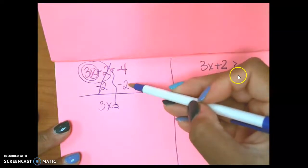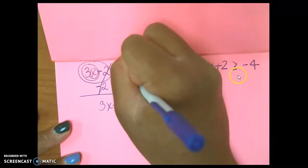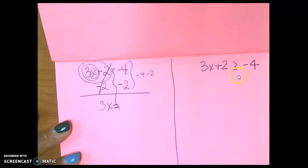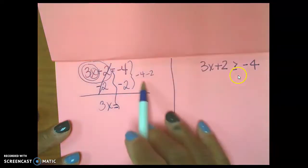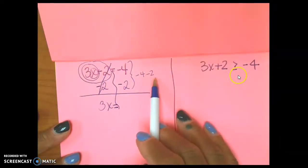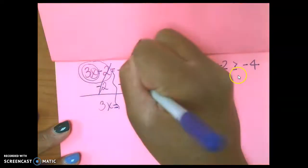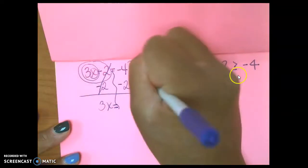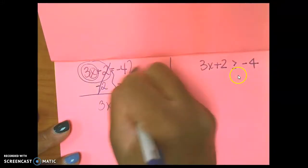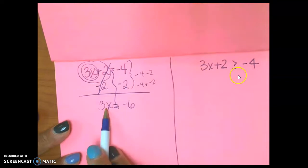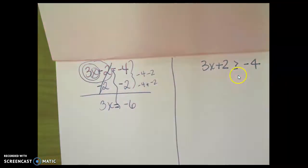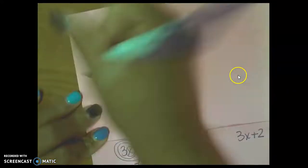Now, I have an integer operation problem. This is negative 4 minus 2. Same signs, add and keep. Different signs, subtract. So, these have the same signs. I need to add them and keep the sign. Negative 4 plus negative 2. You can also rewrite it like this. Remember adding the opposite? Negative 6. Now, once I add, I'm not going to add or subtract again.